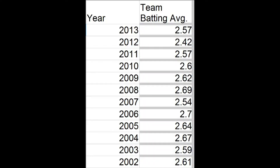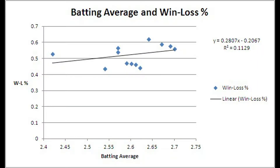Here are the Giants' batting averages in the last 11 years, all in the high .200s. And looking at the graph of their batting average on the x-axis and their winning percentages on the y-axis with the line of best fit, we see that the correlation is very low, an r-squared of only about 0.1, leading us to believe batting average really isn't that important of a statistic for a team.